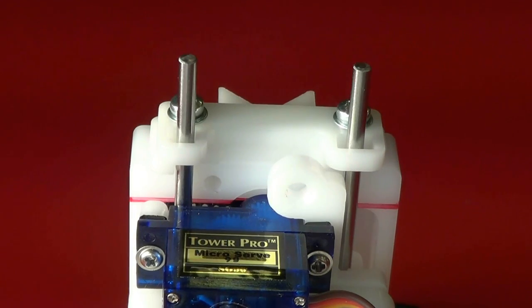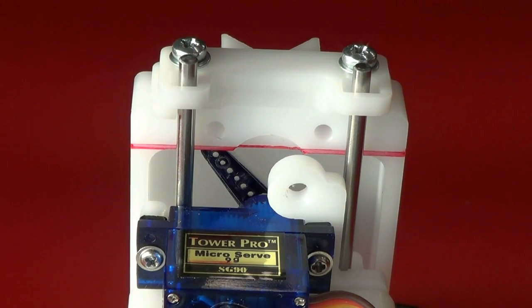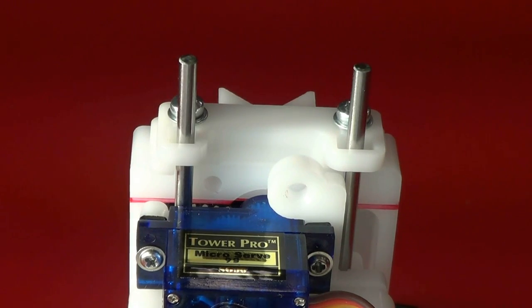The current values in the watercolour bot setup are around 50% for the up position, and 20% for the down position, the paint position.